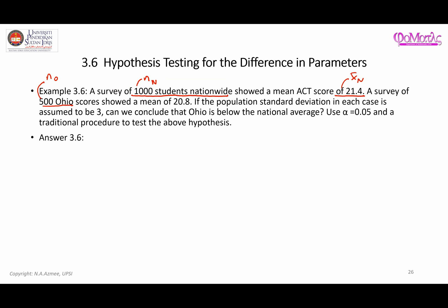The Ohio sample showed a mean of 20.8, and this is x-bar for Ohio. The population standard deviation in each case is assumed to be three, so sigma is known. Therefore you should be using a formula related to the standard normal distribution table. The question asks: can you conclude that Ohio is below the national average? 'Below' translates to the less-than symbol, and this is clearly the alternative hypothesis. The significance level is also given.